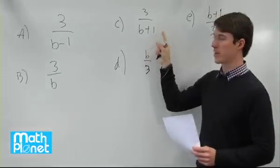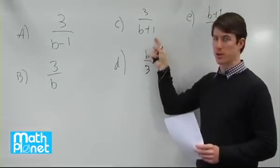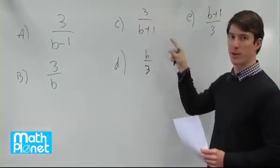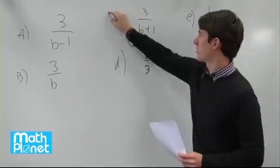This will be less than this one, so this gives us the largest denominator, which gives us the smallest value for this rational expression. So our answer is c.